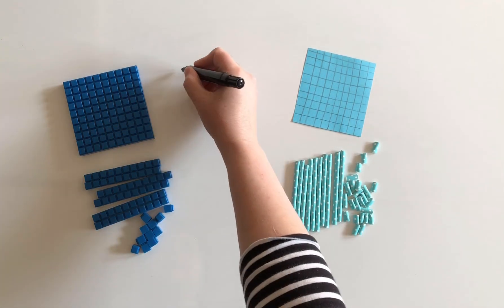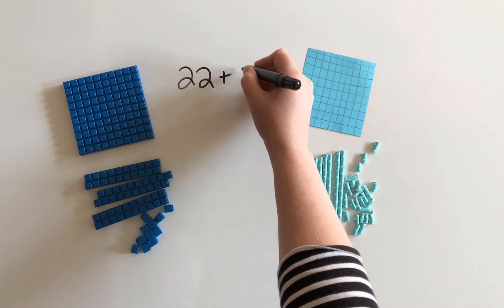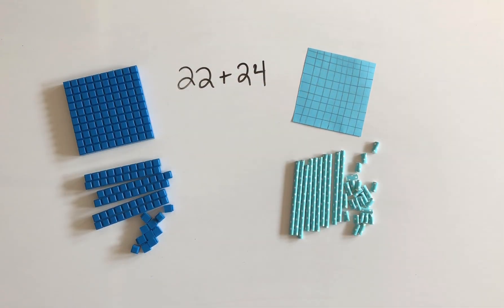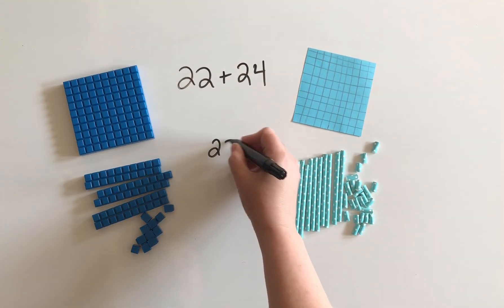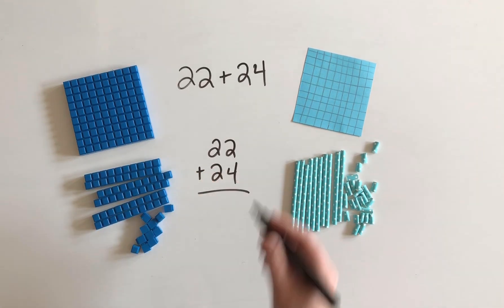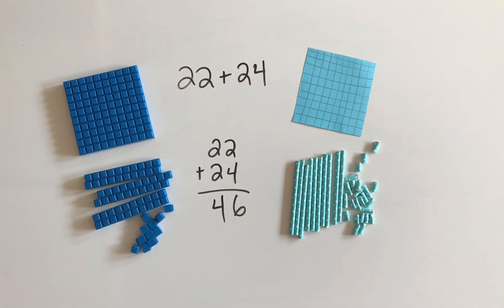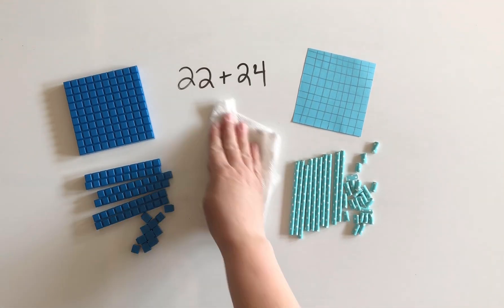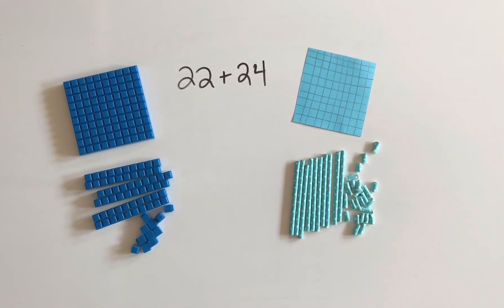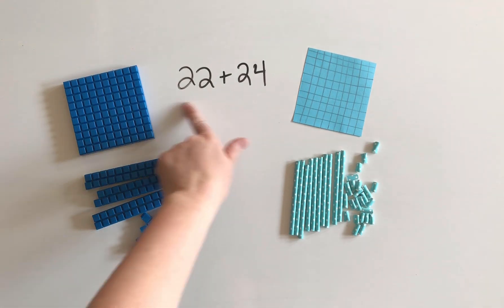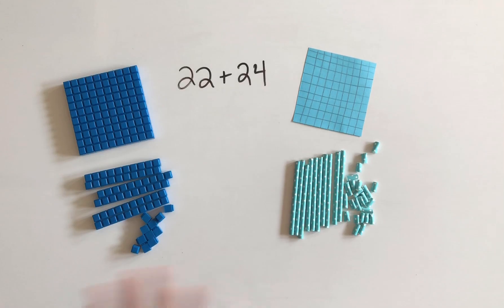So suppose we wanted to add something like 22 plus 24. Sometimes if you're unaware of how your child is learning in school, you might think that the only way to solve this would be to set it up traditionally, add the right side first to make 6 and then add the left side to make 4 to get an answer of 46. But I just wanted to talk to you about how you can help your child explore numbers at home and build them out of things that you have around your house in order to better understand how to solve something like this.